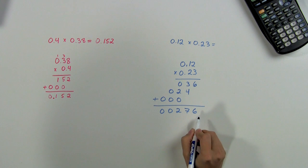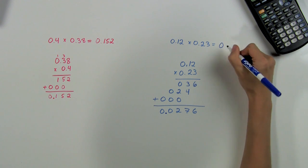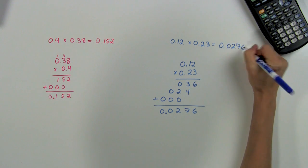So that's how many spaces we move in the answer: one, two, three, four. We place our decimal point there, and that gives us the answer 0.0276. And that's how we multiply decimals like tenths and hundredths. My name is Eugenia, and thanks for watching.